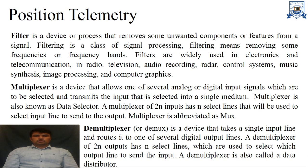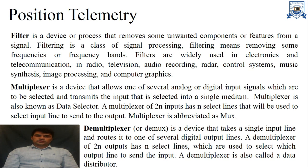The next component is the multiplexer. A multiplexer is a device that allows one of several analog or digital input signals to be selected and transmitted into a single medium. For example, if we have multiple measured quantities like flow, pressure, and temperature and want to transmit all three using a single line, we use a multiplexer. A multiplexer is also known as a data selector. A multiplexer of 2-to-n inputs has n select lines used to select the input line to send to the output. Multiplexer is abbreviated as MUX.